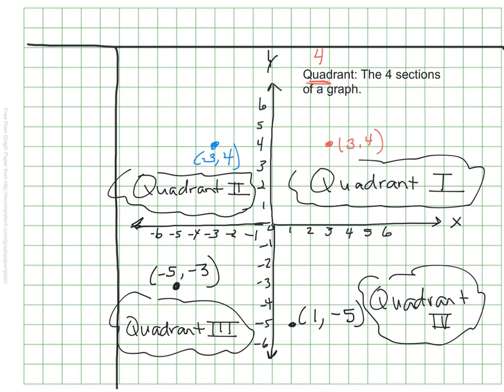Notice too, or you might have noticed, that we use Roman numerals when we are numbering our quadrants. So it looks like an i, double i, triple i, and then iv. But it really means one, two, three, and four. And that's just kind of a customary tradition with math to use Roman numerals.